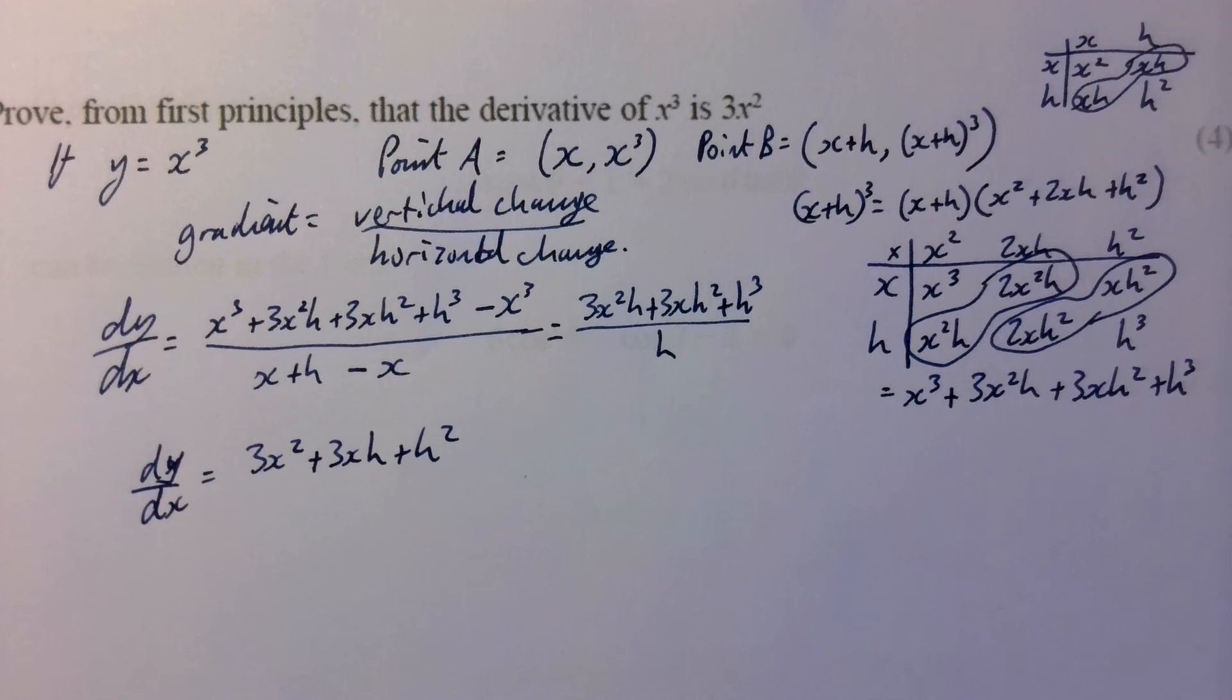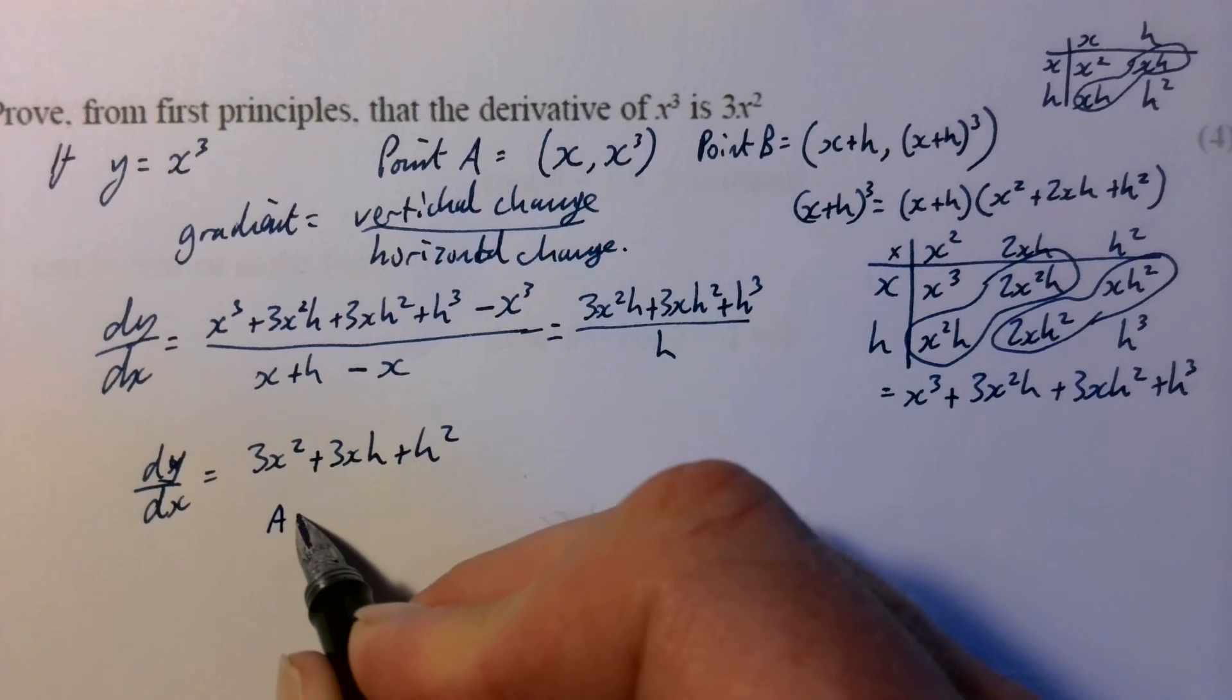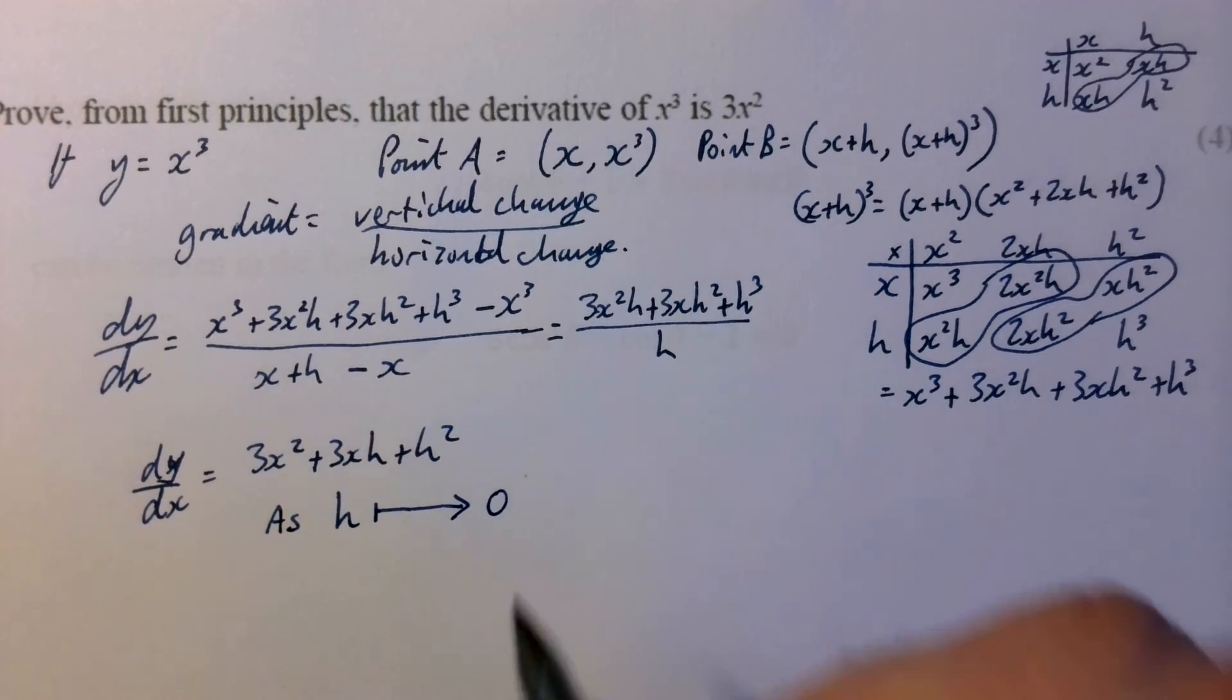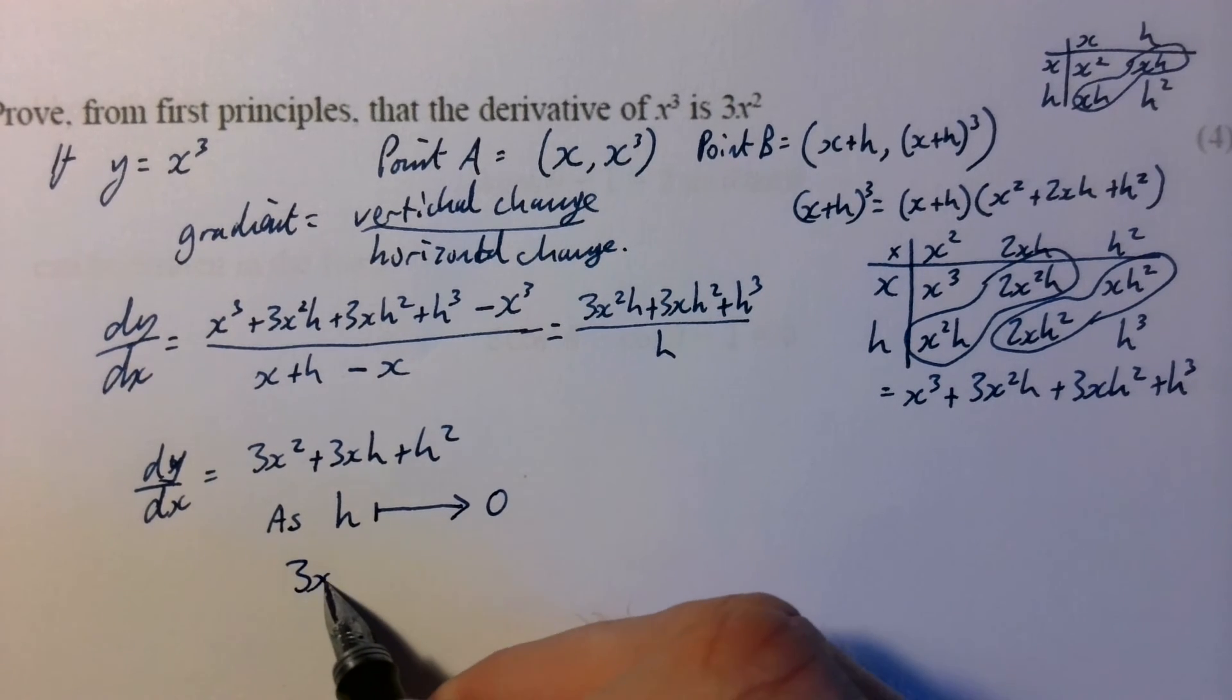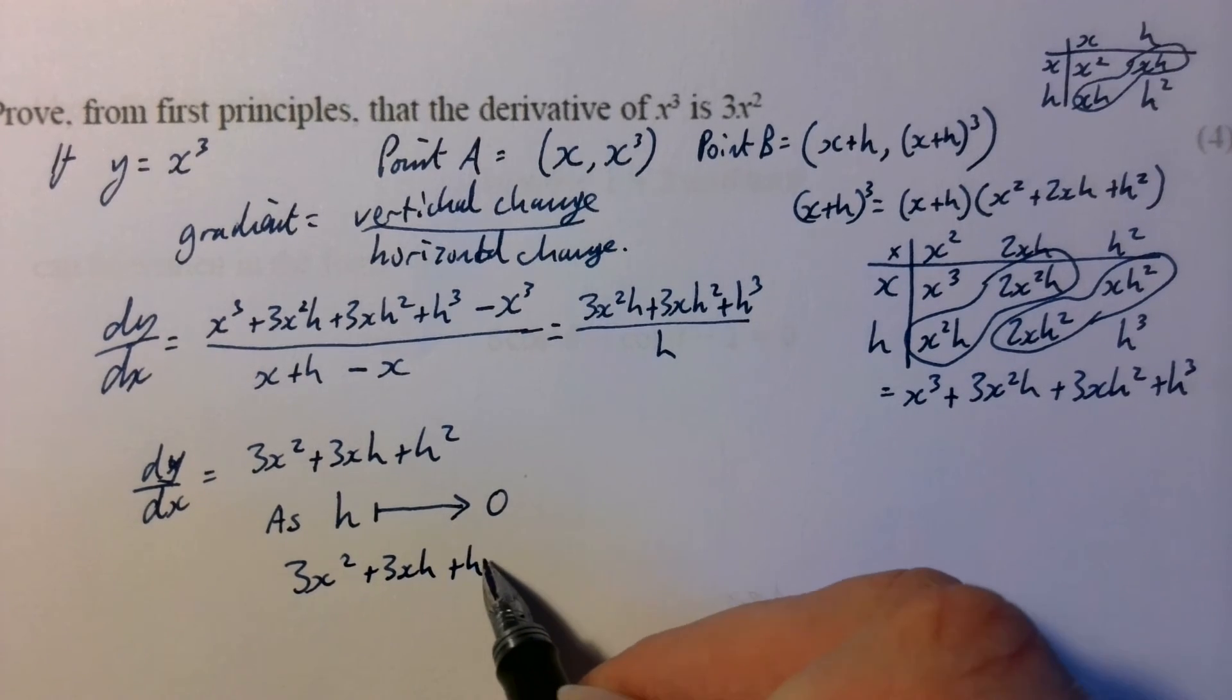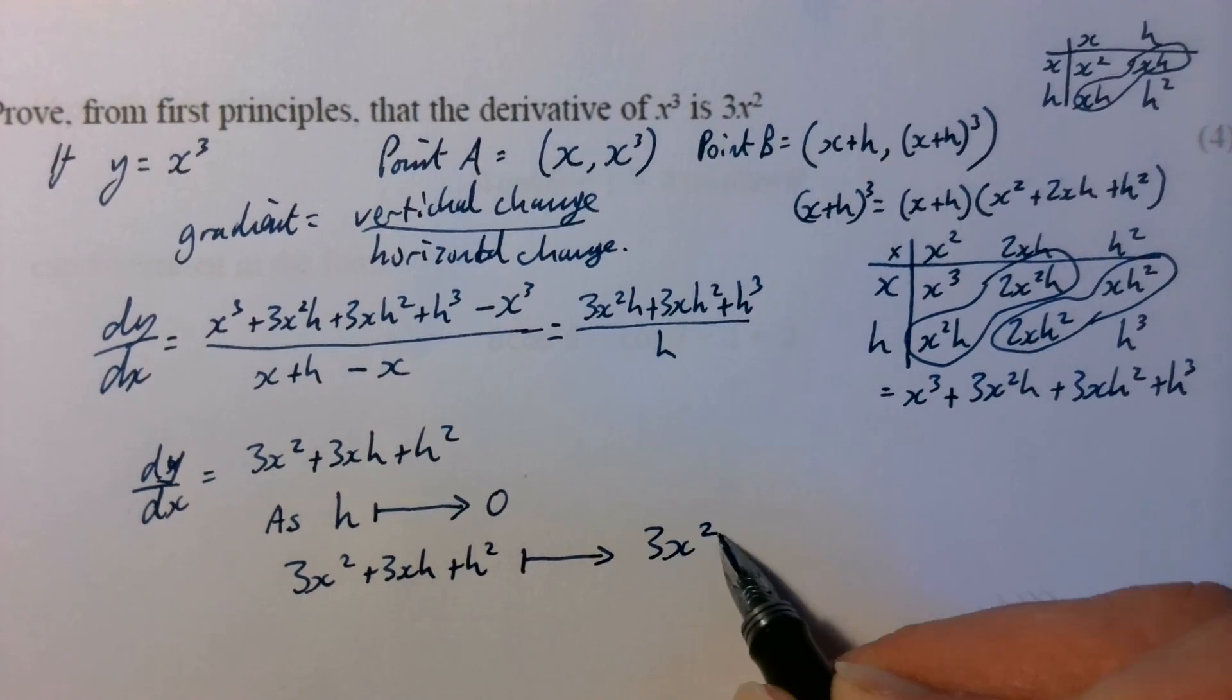How do we get rid of those h's? Well, this is the clever bit. This is where you just say, as h tends to 0, 3x squared plus 3xh plus h squared tends to 3x squared.